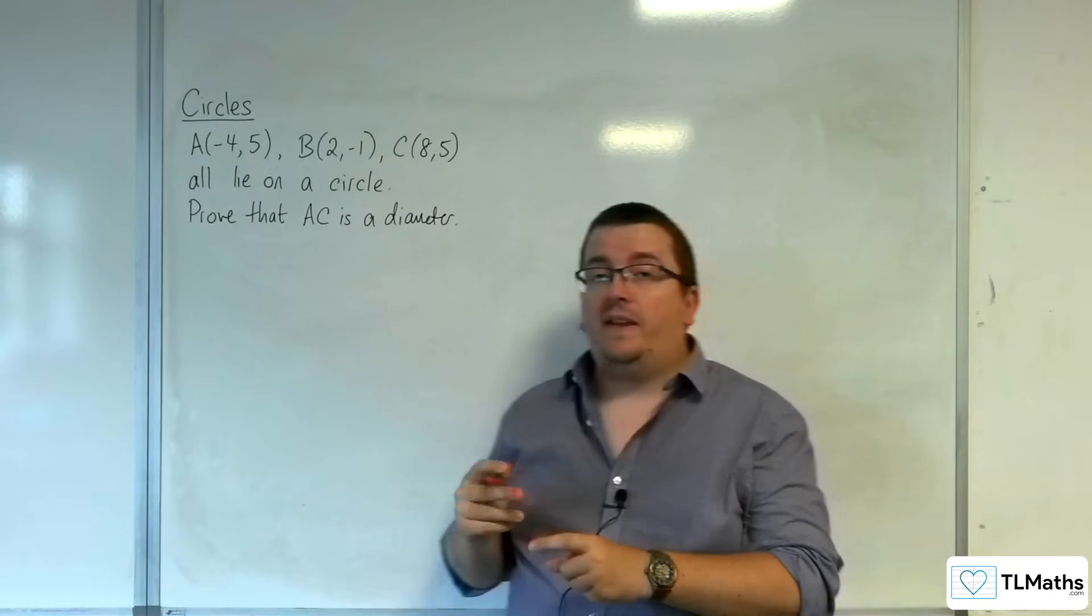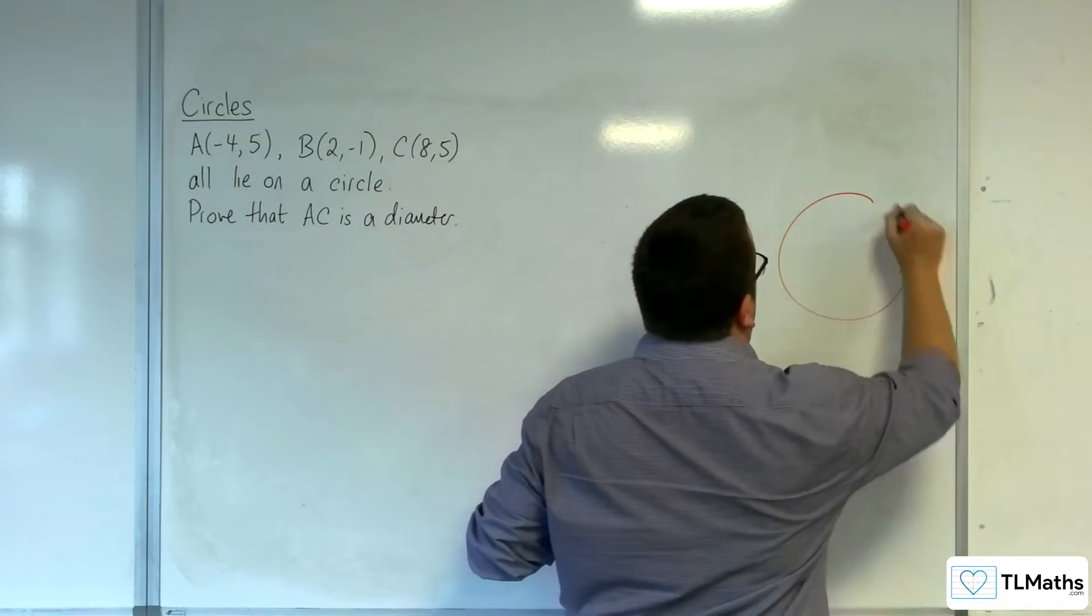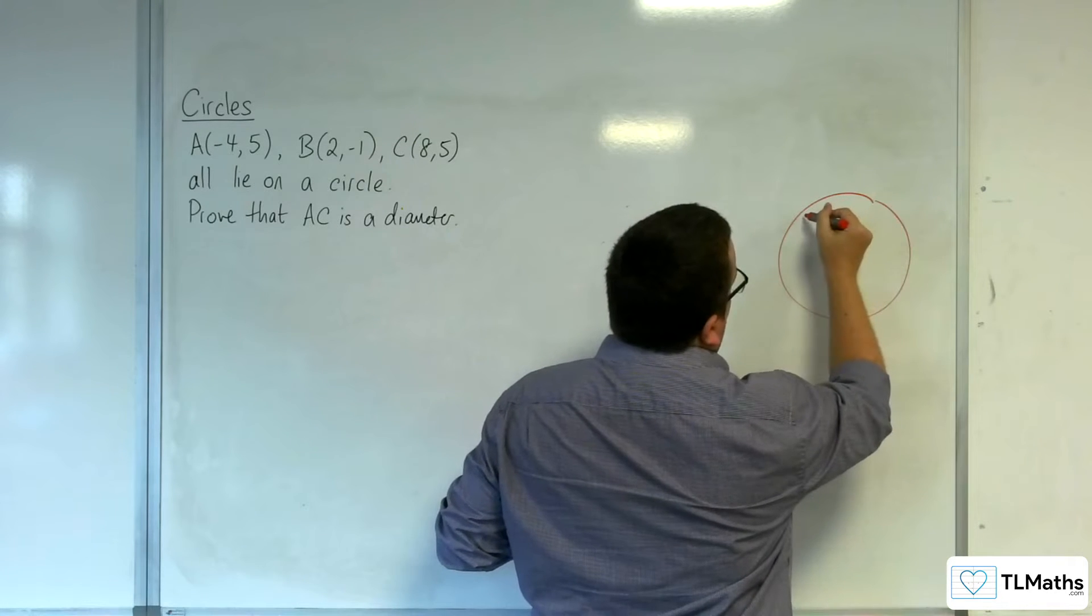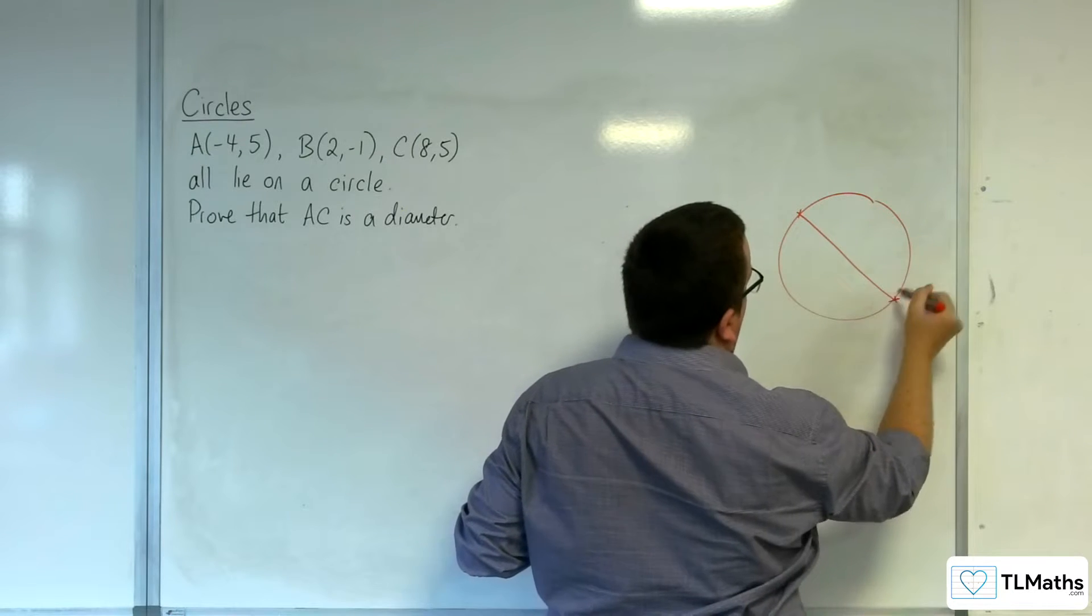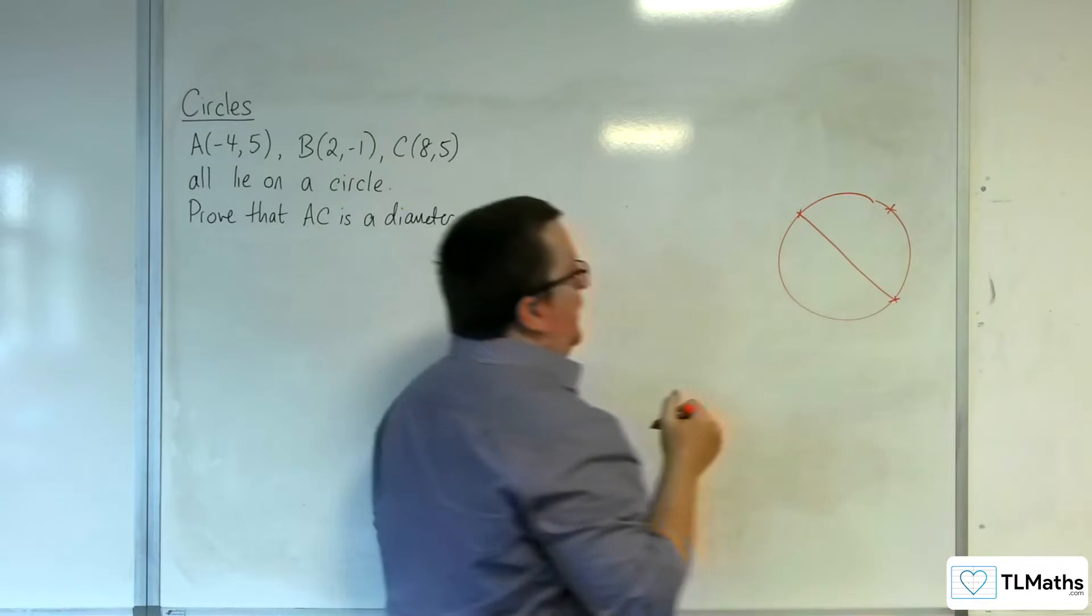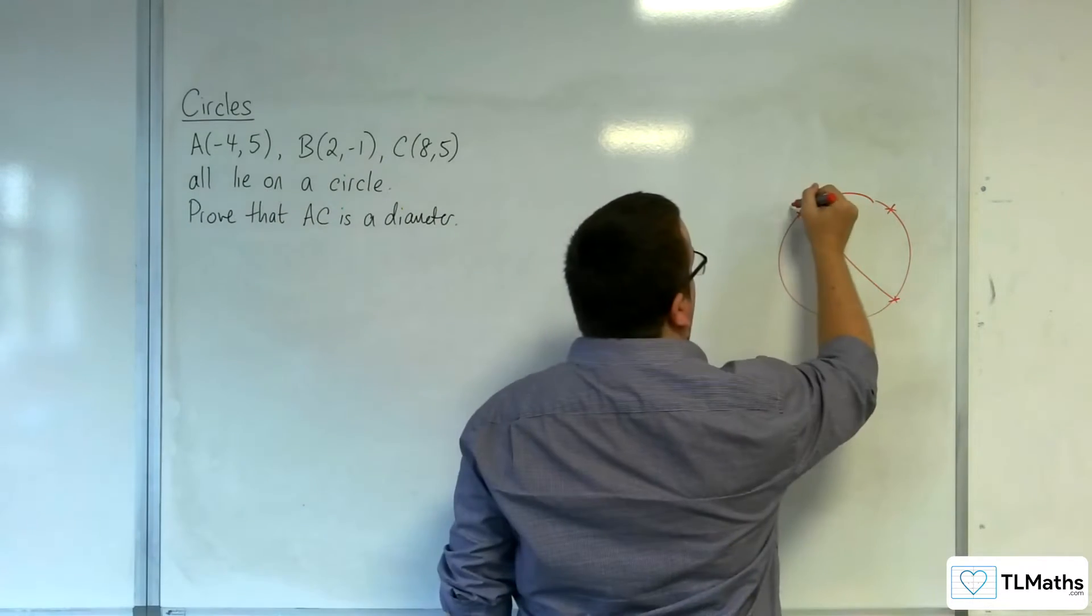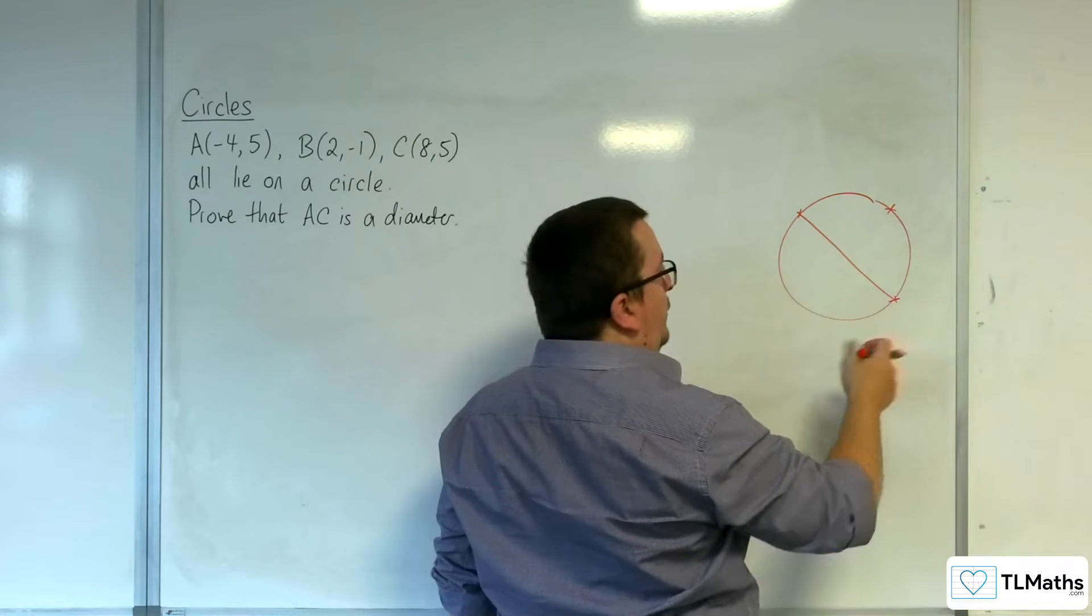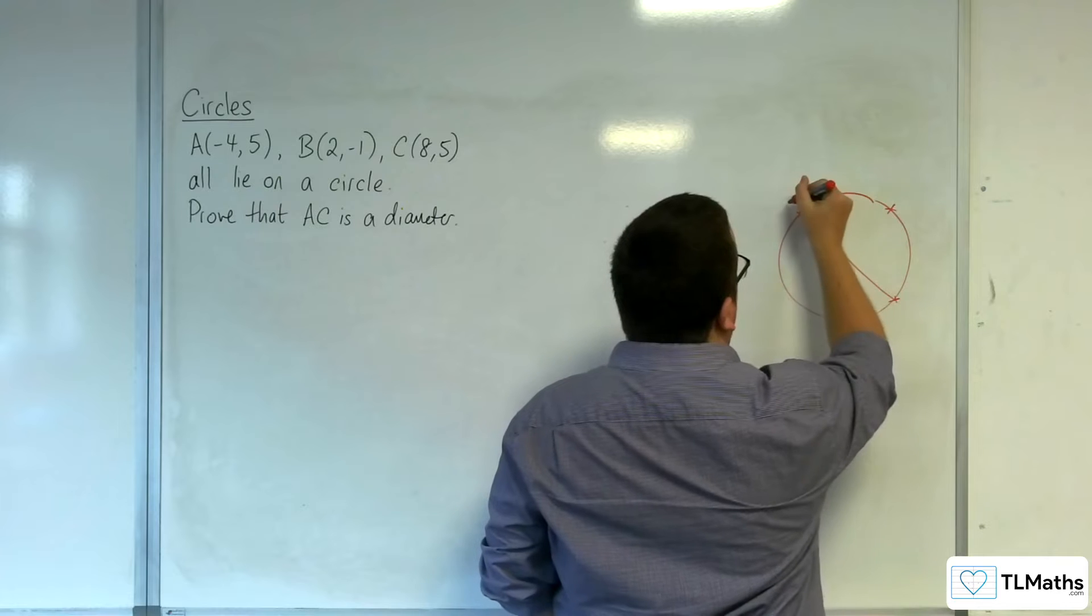Now, what you need to be thinking about is circle theorems here. So, your circle, and if you've got three points on the circumference, then if that is the case, and we want AC to be a diameter, now I'm not drawing this to scale, so the points aren't necessarily in the correct places. We'll do another diagram in a moment.